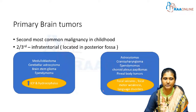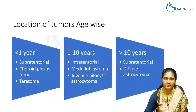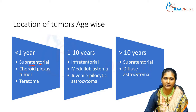Based on tumour location by age group, in children less than one year, supratentorial tumours are more common — particularly choroid plexus papillomas and teratomas. In the childhood age group of 1 to 10 years, infratentorial tumours are more common, specifically medulloblastoma and juvenile pilocytic astrocytoma.